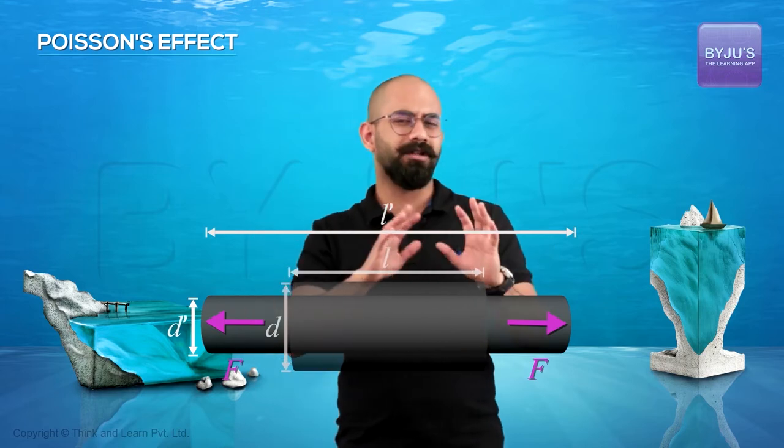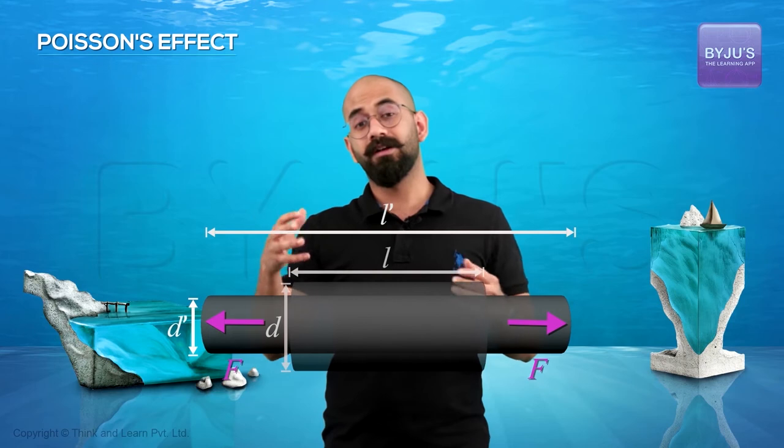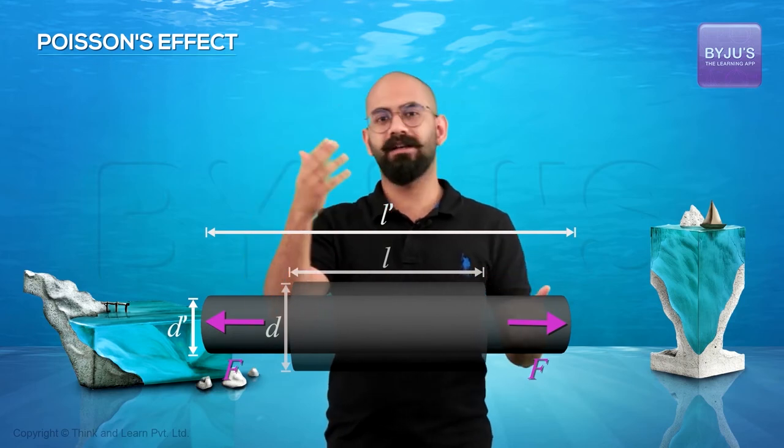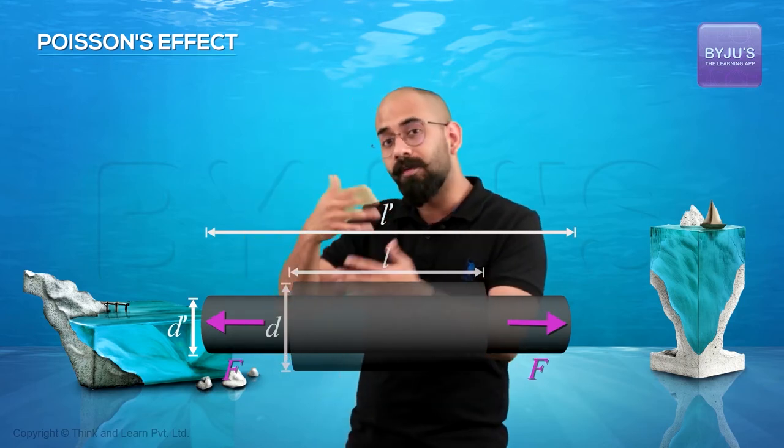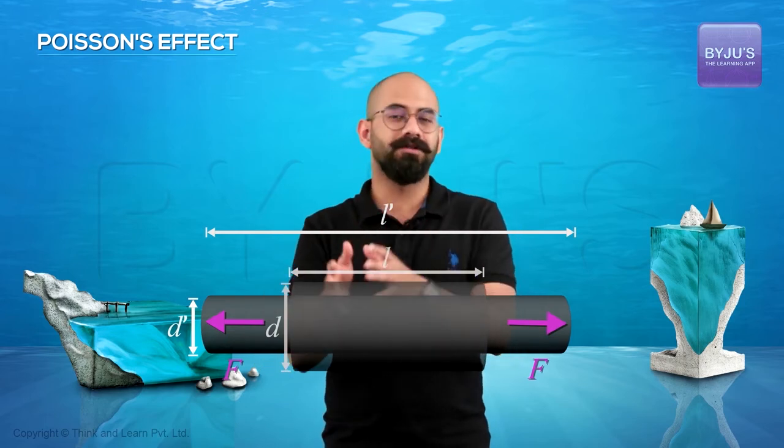Mainly because to keep the volume constant, all that is fine, but the ratio of how much the diameter changes and the ratio of how much the length changes is a constant, and it's called the Poisson's ratio.